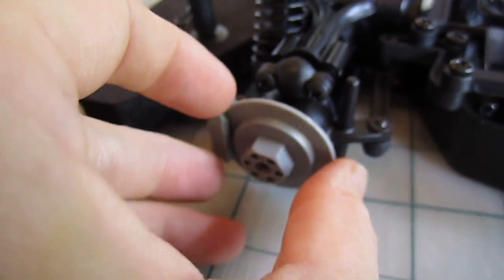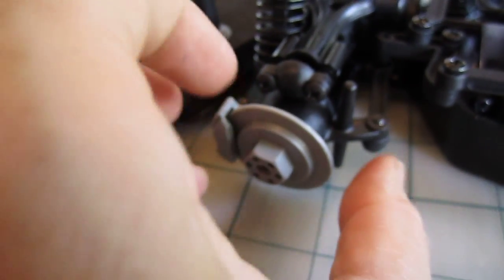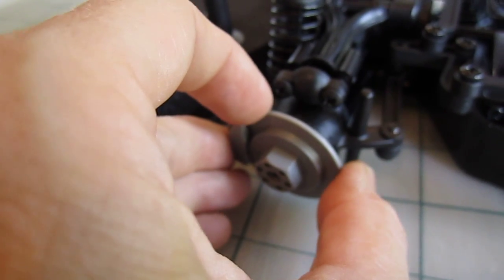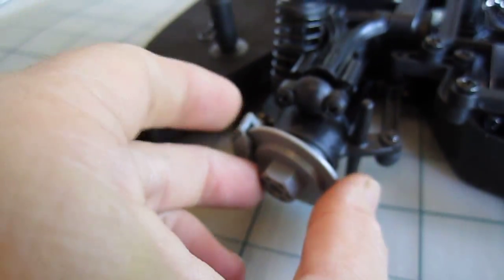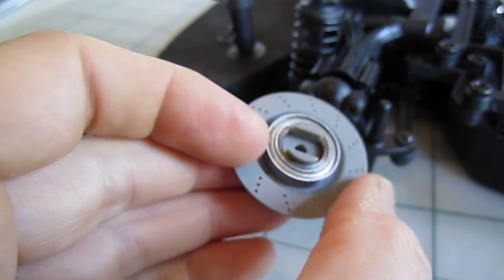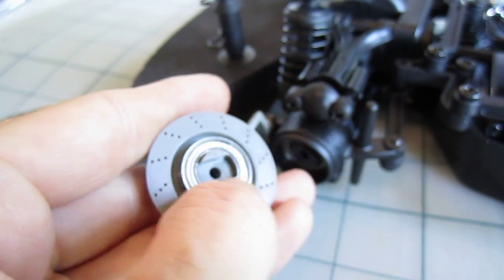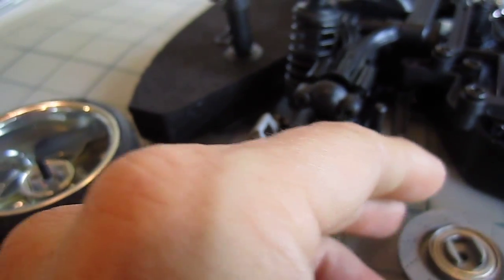And next is this little piece that looks like a disc brake. You're going to pull that off out of the little fake caliper. Make sure you don't lose these little metal bearings in there. Set that aside.